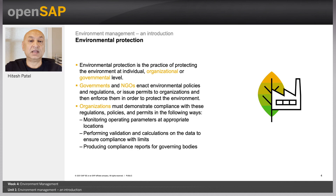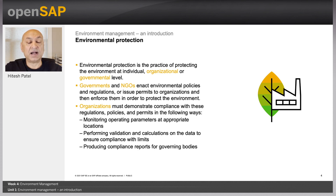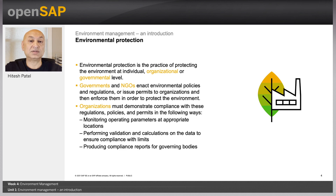Let's understand how these key environmental issues are being dealt with and what's being done to protect our environment and ecosystem. First, environmental protection. What is it? It is the act of protecting the environment by an individual, organization, or a government entity. Governments enact environmental policies and regulations and in some cases issue licenses to operate or permits to protect the environment. Organizations, in turn, have to make sure that they comply with such mandates.